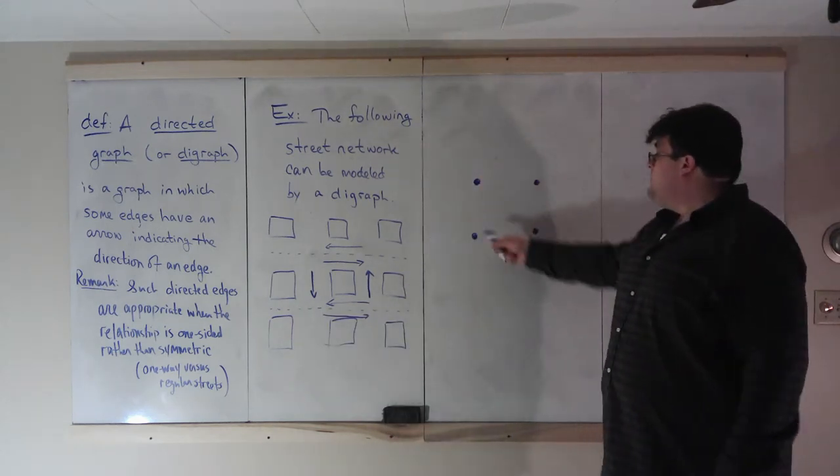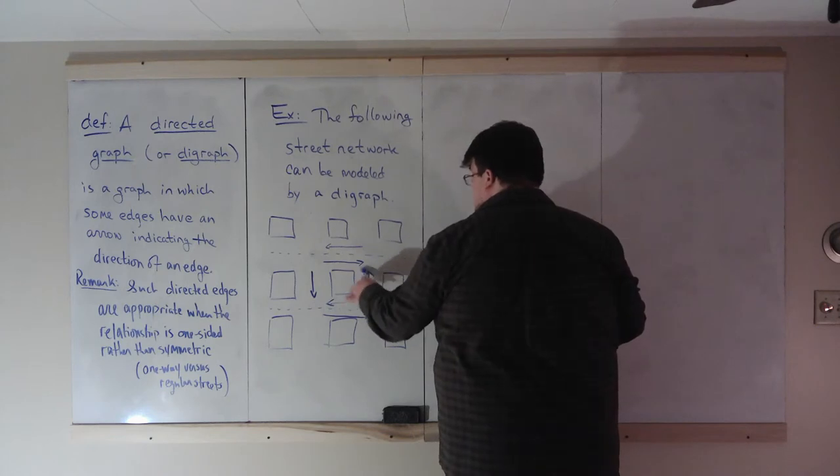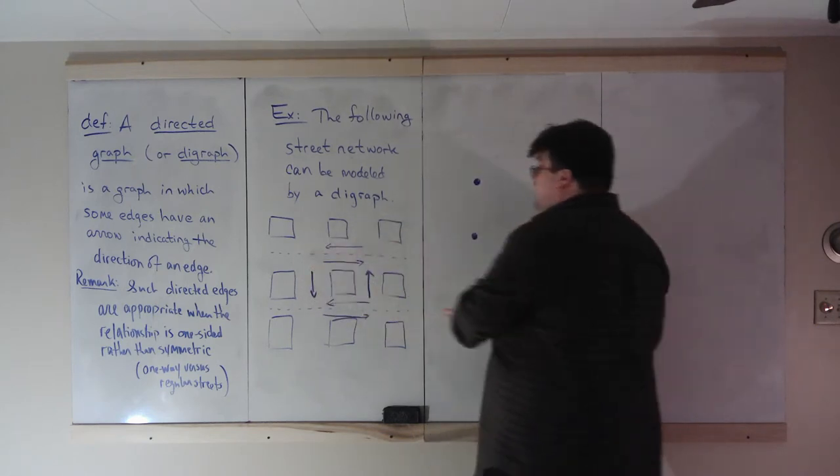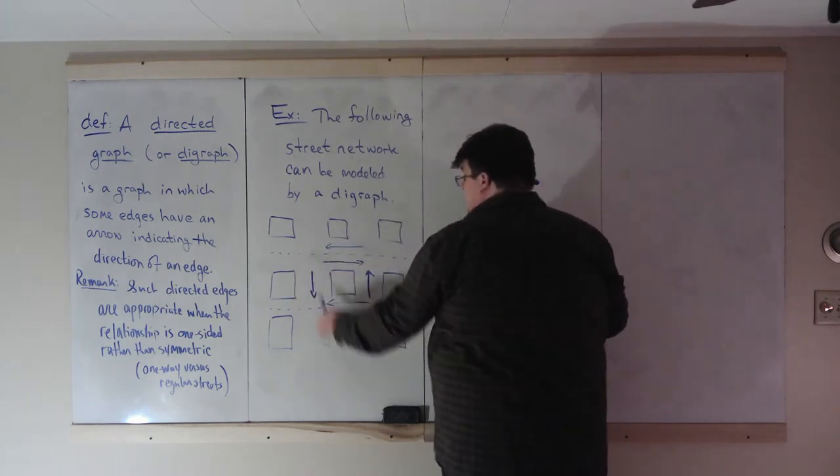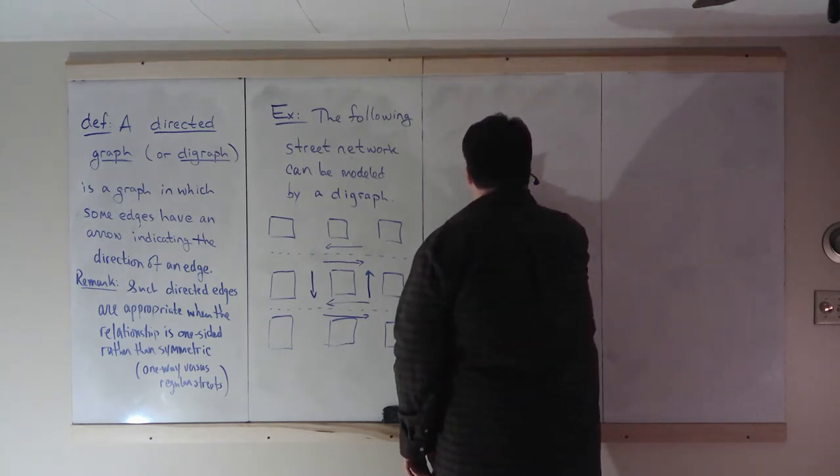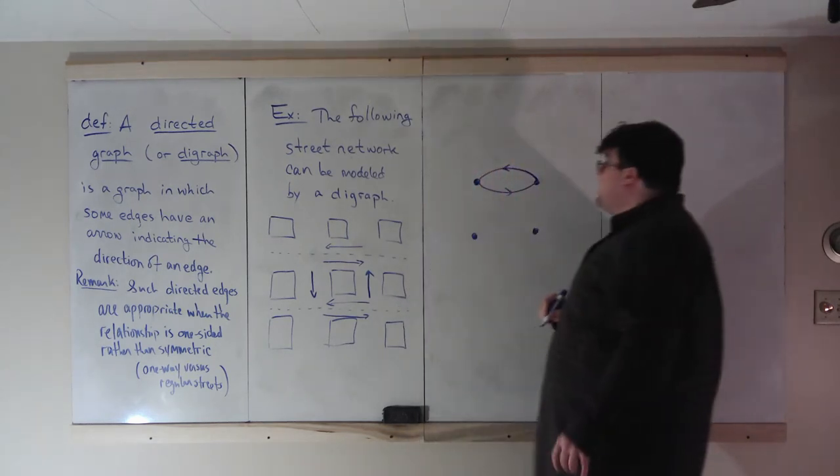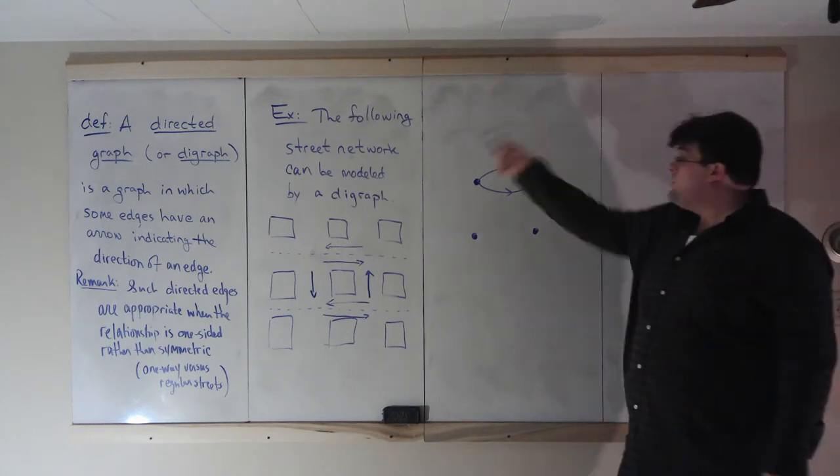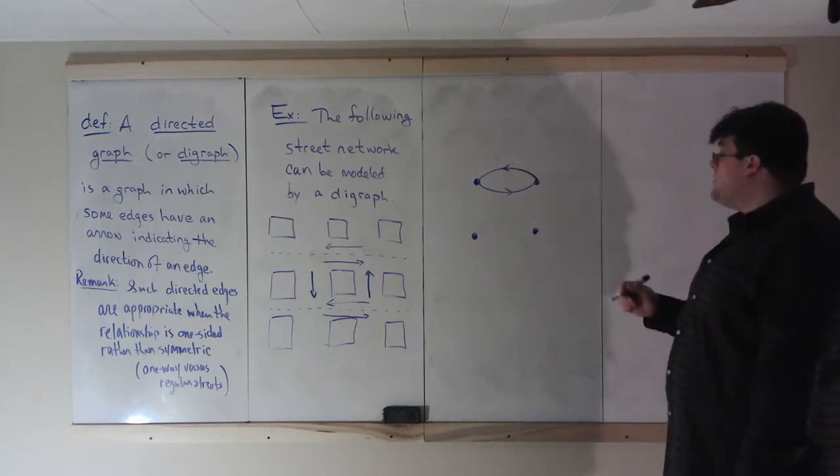So here we have these four nodes. Up here connecting this section to this section. Well, we're going to have one edge going that way and one edge going this way. And we'll draw that like that. So we have an edge going that way with an arrow and an edge going the other way with an arrow.